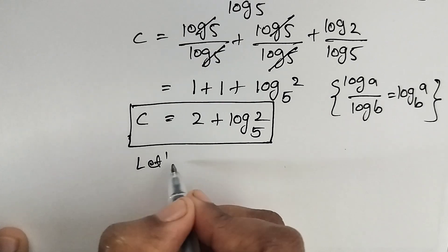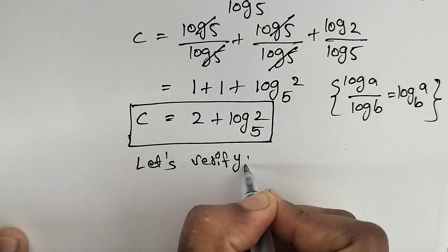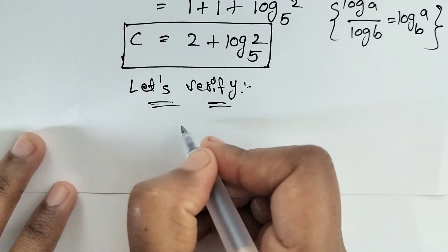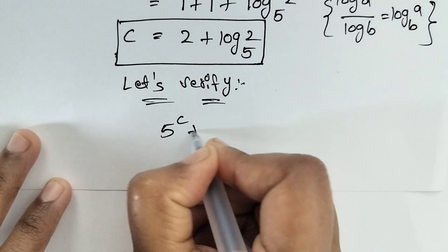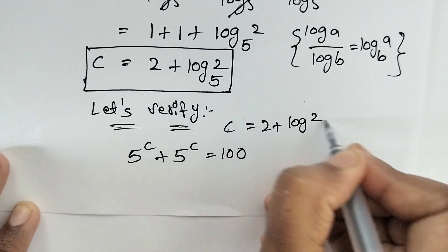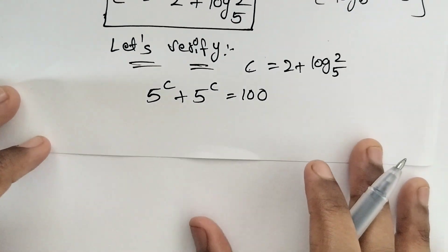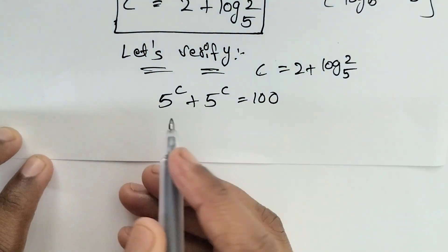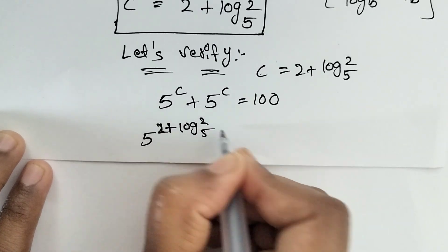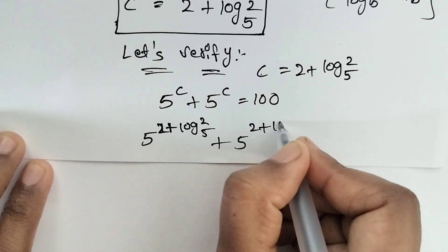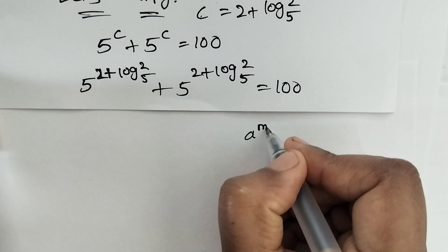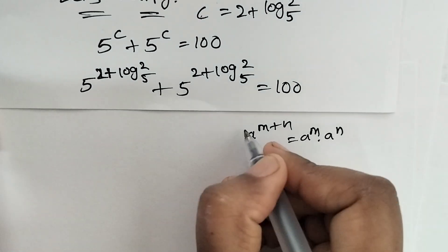Now let's verify. We write the original equation: 5 to the power c plus 5 to the power c is equal to 100. The value of c is 2 plus log of 2 to the base 5. We substitute this value of c into the equation. We apply the formula a^(m+n) = a^m × a^n.